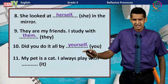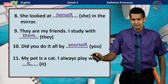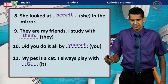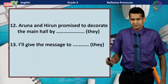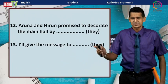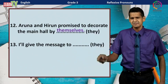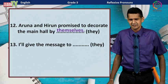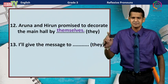Number eleven: My pet is a cat. I always play with ___. The object pronoun of 'it' is also 'it.' I always play with it. Number twelve: Arun and Hirun promise to decorate the main hall by ___. There are two persons, so the subject pronoun is 'they' and the reflexive pronoun is 'themselves.'